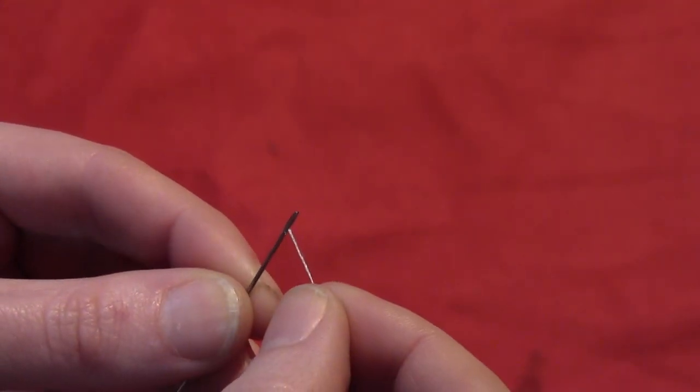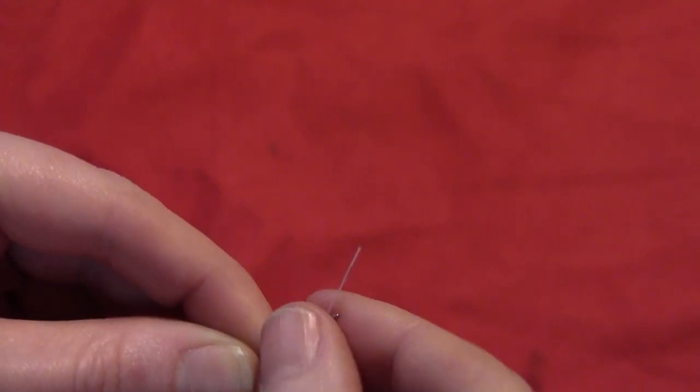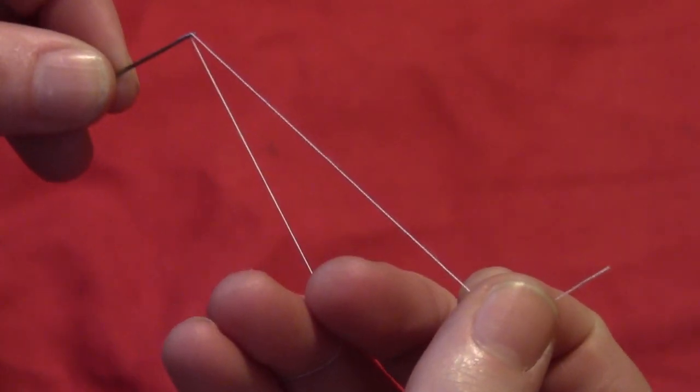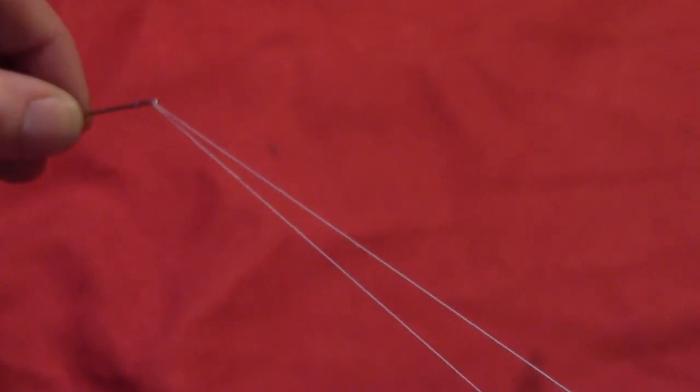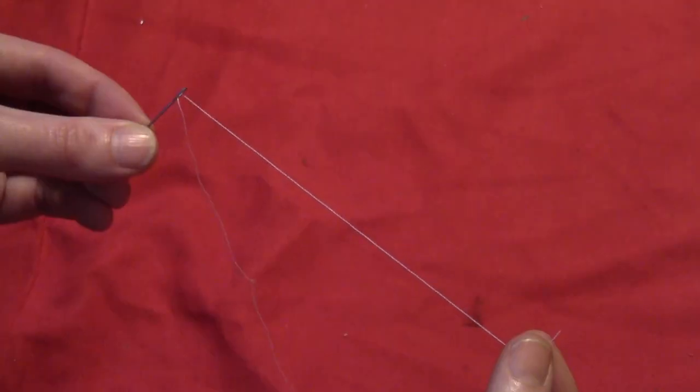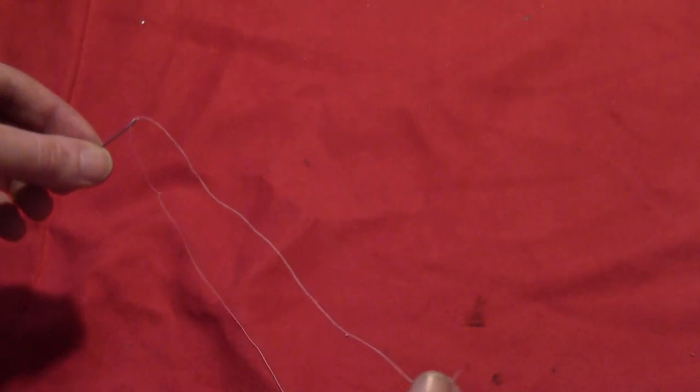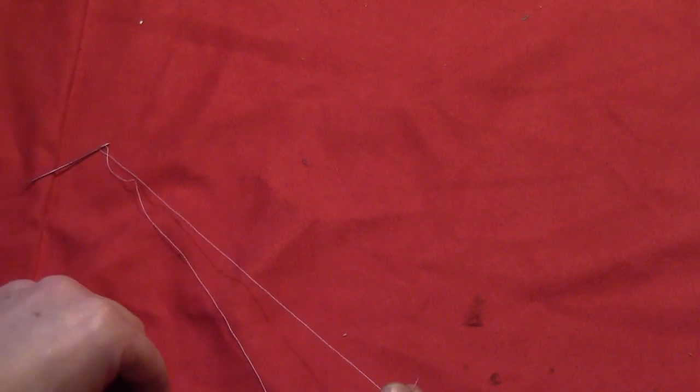Then you just want to take it and push it through the hole in the needle. Grab the end of the thread that came out and pull it until the ends are even. Keep pulling it down until it reaches the other end of the thread.